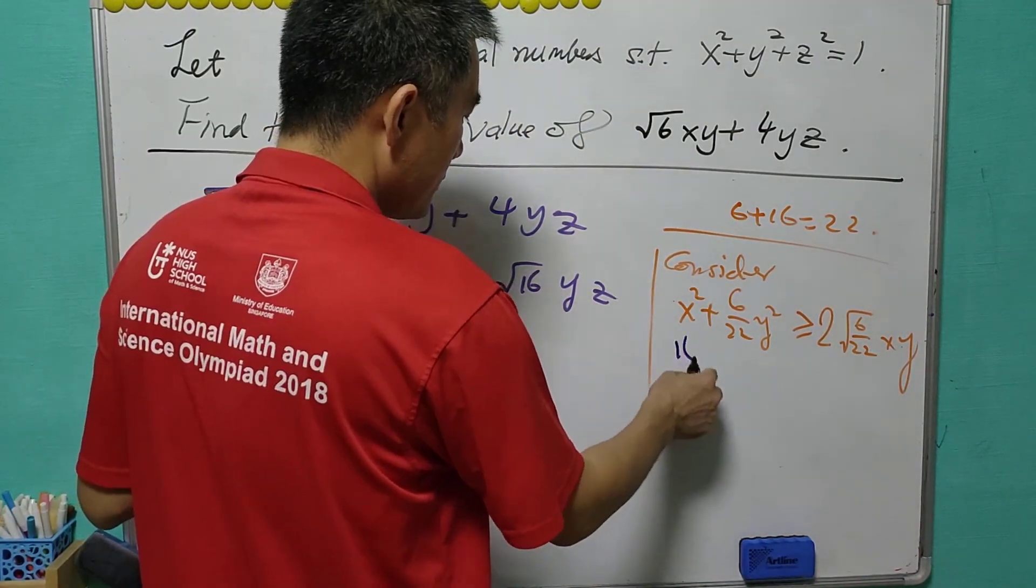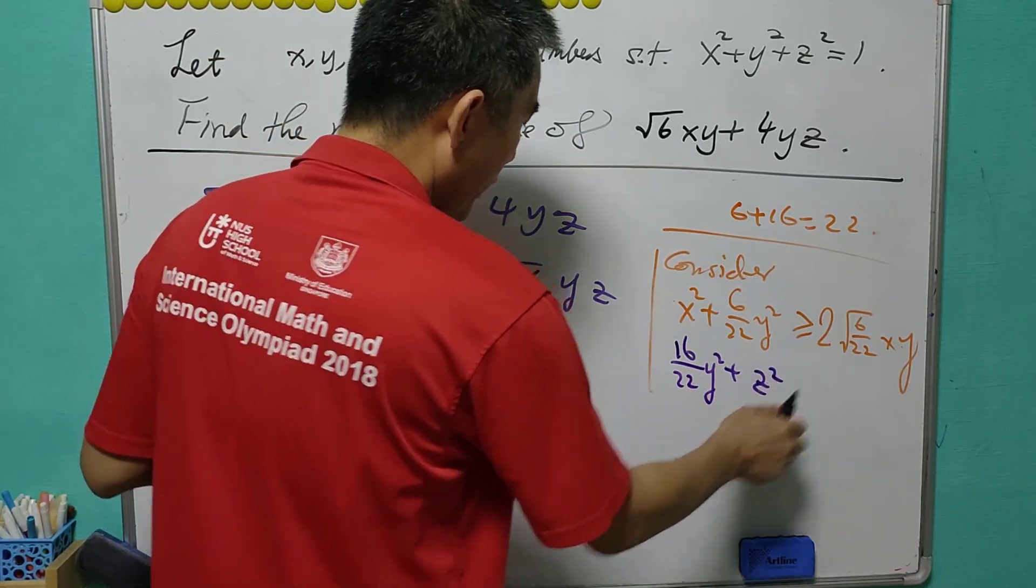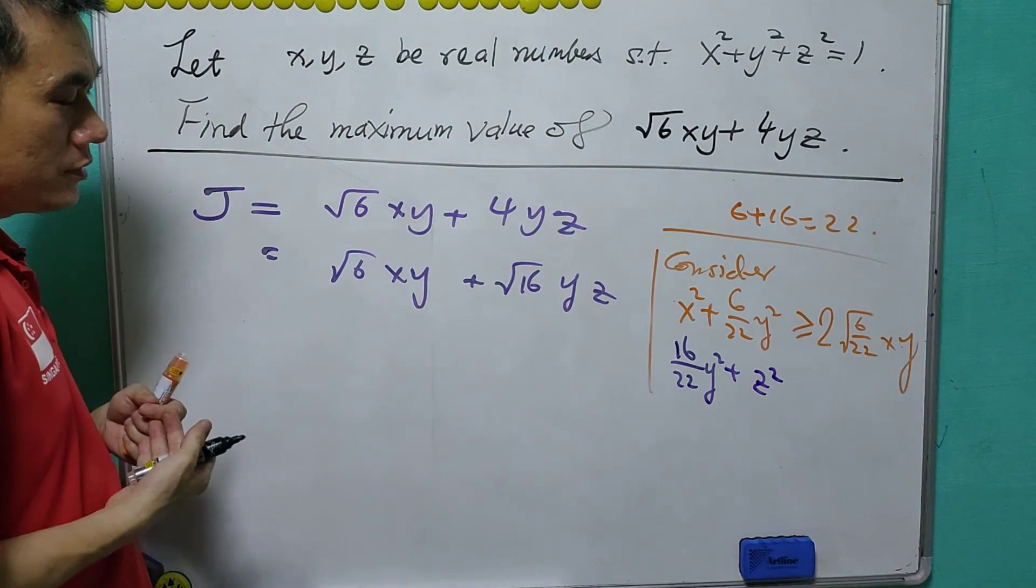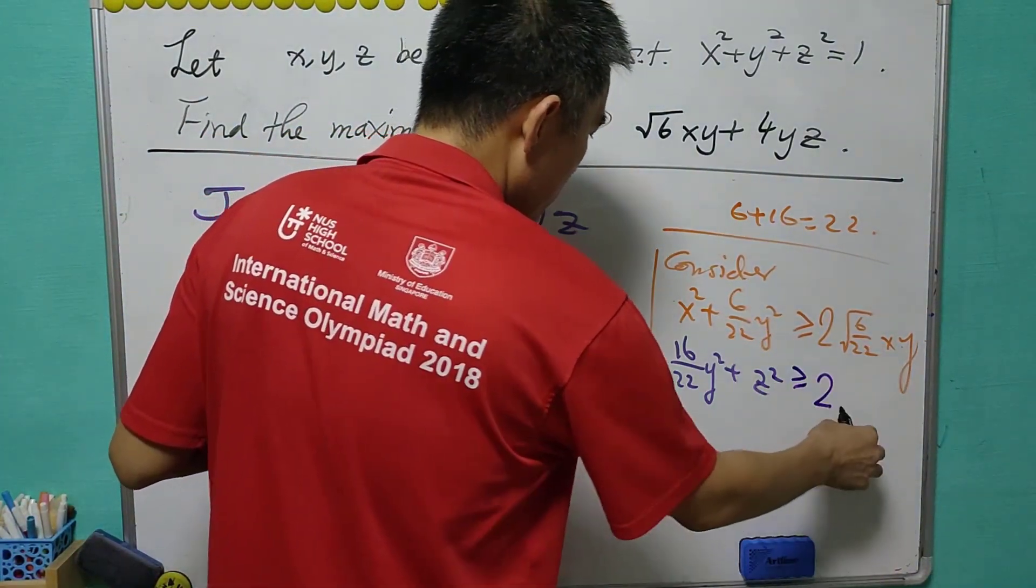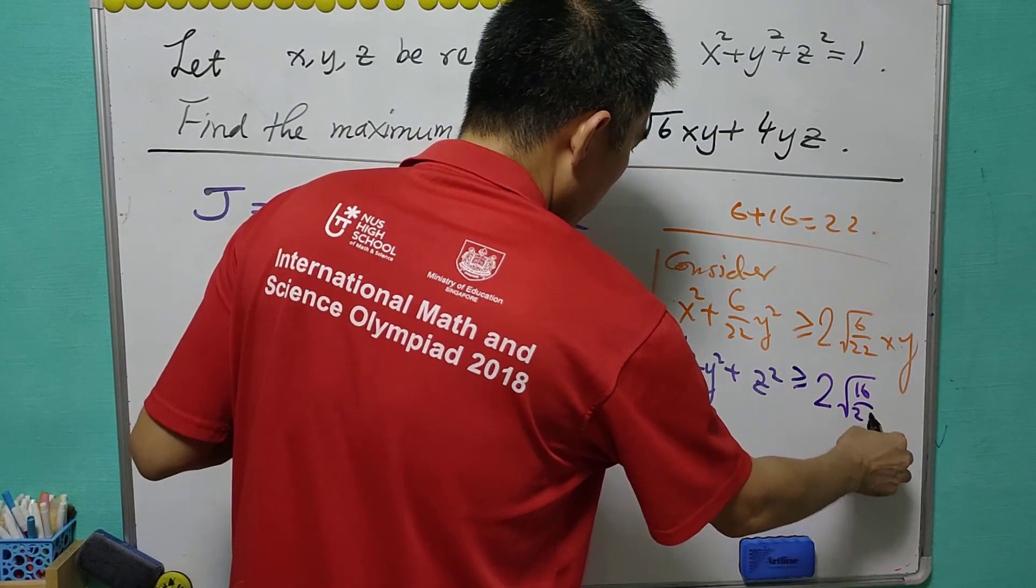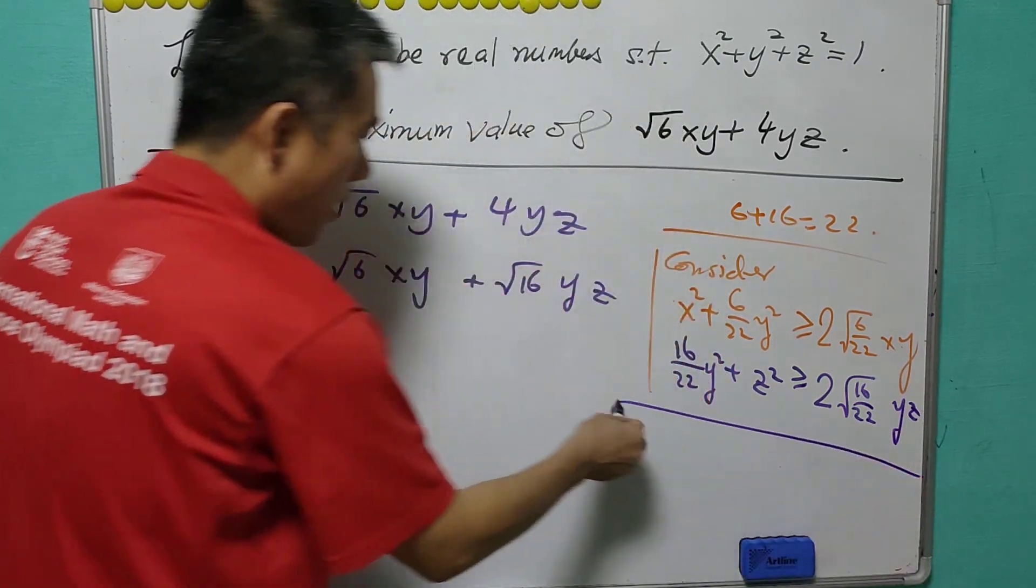Similarly, we consider (16/22)y² + z². Using AM-GM inequality, this will be greater than or equal to double of √(6/22)yz, and we add up everything together.